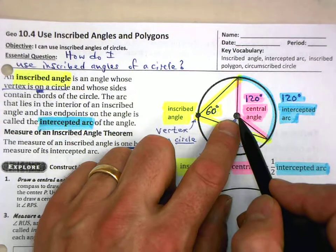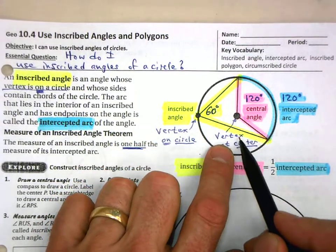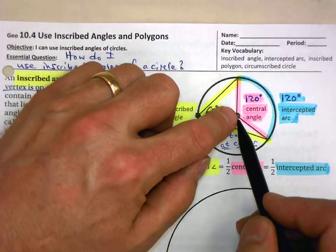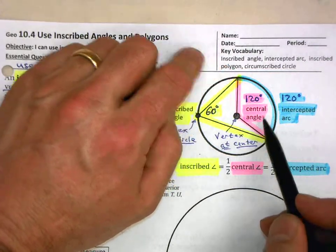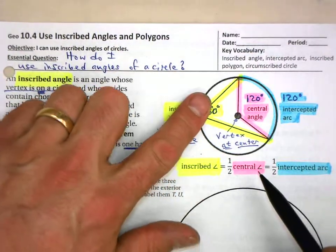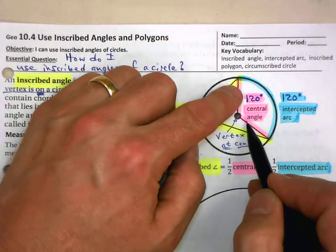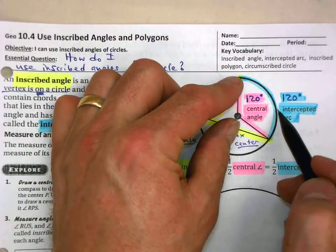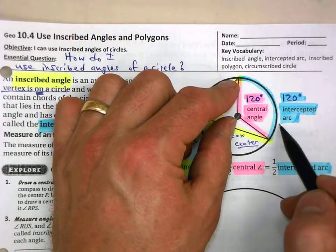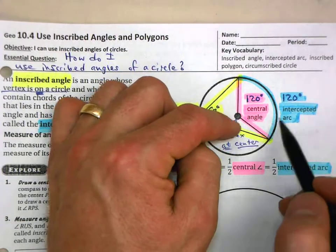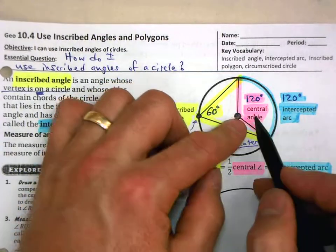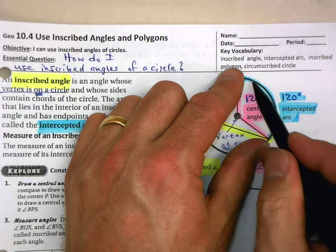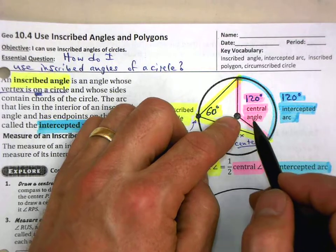Let's begin with the central angle. When the vertex of an angle is at the center of a circle, we call that a central angle. Here's your vertex and it spreads out — this is a central angle of this circle. When this central angle comes out, think of these as hands coming out and intercepting this part of the circle on the inside. Any portion of a circle is called an arc. We call this the intercepted arc of this particular central angle.